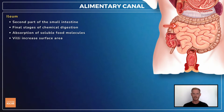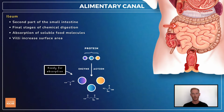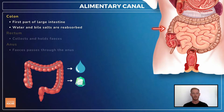Next, food moves into the second part of the small intestine, called the ileum. Enzymes in the epithelial lining break down the now short-chain carbohydrate and protein molecules into simple reducing sugars and amino acids, which are small enough to be absorbed and taken up by the bloodstream. The ileum is extremely long, and its lining is folded into villi, which increases surface area for absorption.